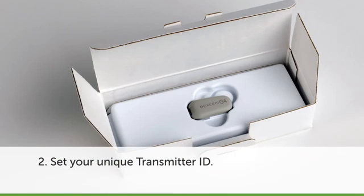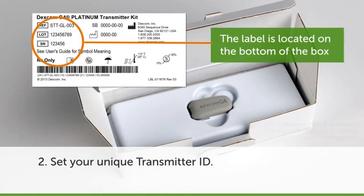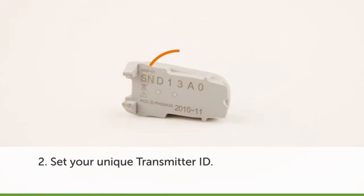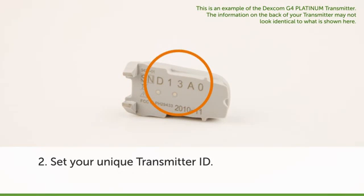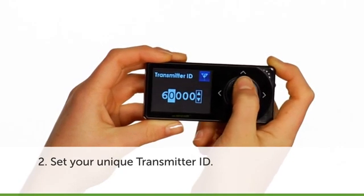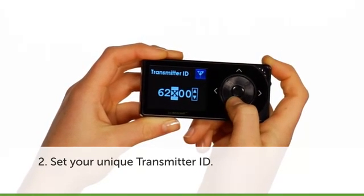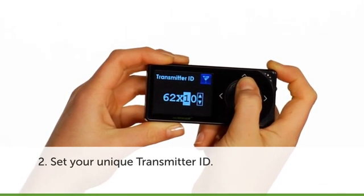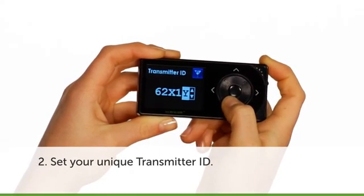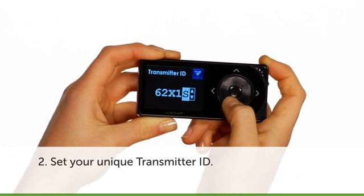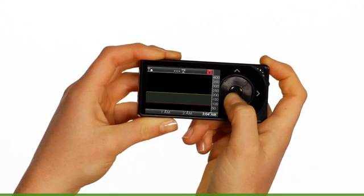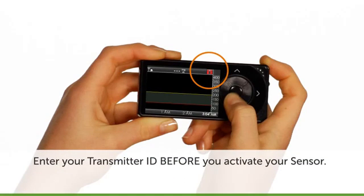Your unique transmitter ID makes it possible for your transmitter to talk only to your receiver. The ID can be found on the outside of the transmitter box label and engraved on the back of the transmitter itself. If you have difficulty locating your transmitter ID, contact Dexcom Technical Support. Enter each transmitter ID letter or number into the receiver one at a time, starting with the first letter or number. Press the up or down buttons to adjust each value, and press the right or select button to move to the next field. After entering the last value, press the select button. Note: you can only enter your transmitter ID before you activate your sensor. During a sensor session, transmitter ID will not appear as an option on your device.